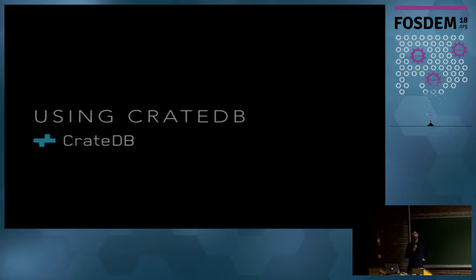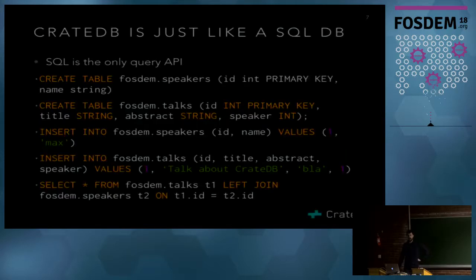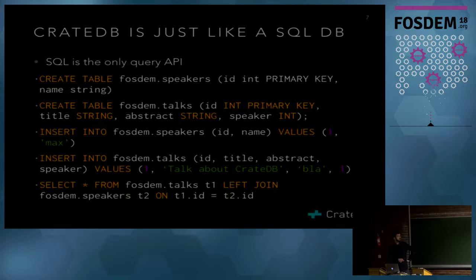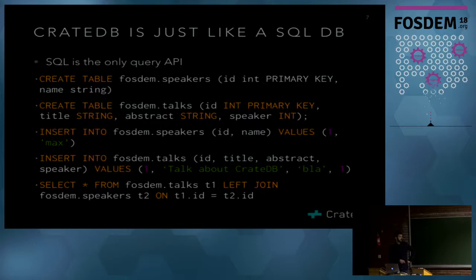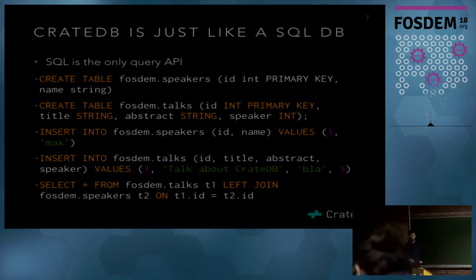So what is it like to use CrateDB? In a way, CrateDB is just like a normal SQL database. We can use SQL statements to create a table for speakers, use primary keys, and have data types like integer and string. If we have a speakers table and a talks table, we can of course insert data and then do a left join on the talks table, joining on the speaker ID.